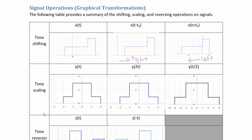Hopefully most of this section is a review from your math courses. For time scaling, if we have y(t) with boundaries from negative 4 to 4, then y(2t) compresses the signal — at negative 2, 2 times negative 2 gives negative 4, preserving the same value of 1. Conversely, y(t/2) is a stretch: at negative 8, negative 8 divided by 2 is negative 4, giving the same original value. So y(2t) halves the width and y(t/2) doubles the width.